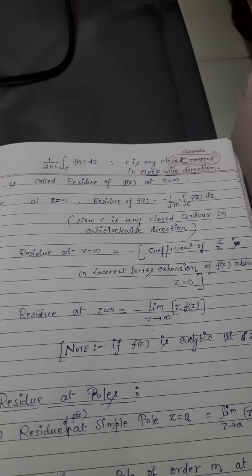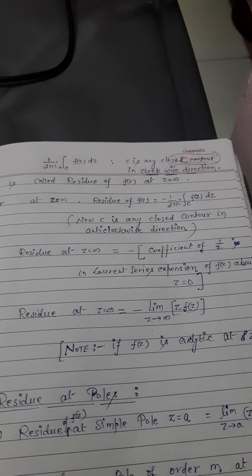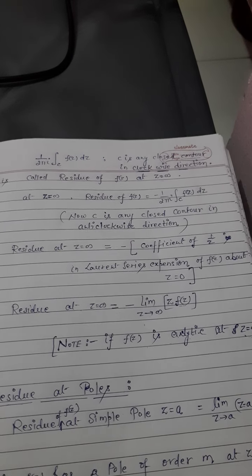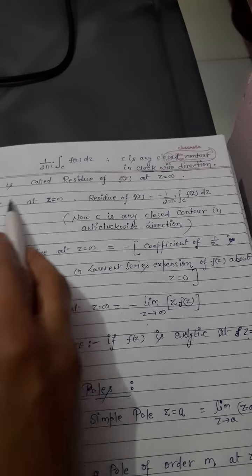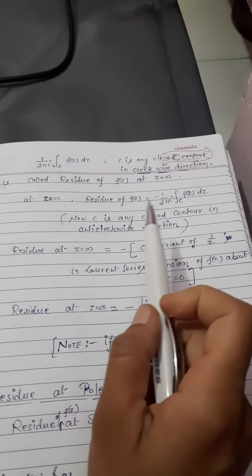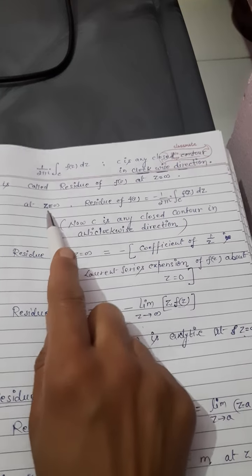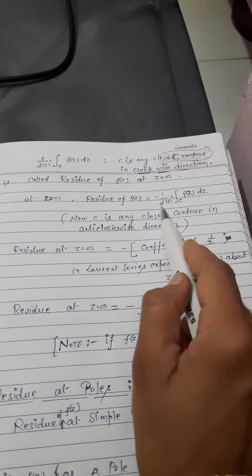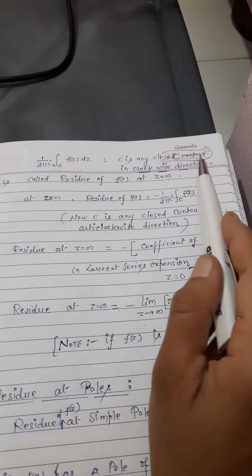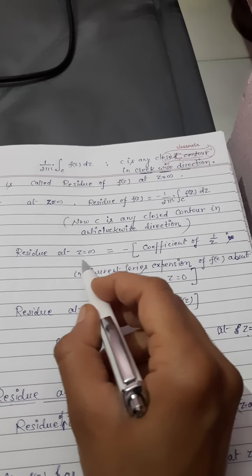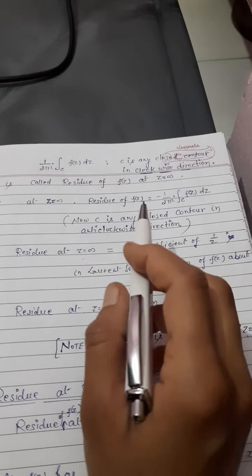z equal to infinite पर जो भी function given है, उसका residue कैसे find out करेंगे। देखो, इसमें आप लोगों को points बताये थे — यदि c is anti-clockwise direction में लेते हैं mostly, तो उस case में यदि z equal to infinite पर residue find out करना है, तो उसकी value minus 1 upon 2πi times the integration of c, f(z) dz होगी।